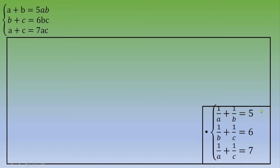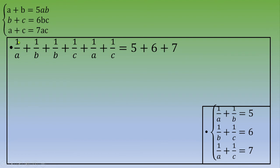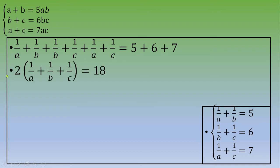The next idea is to add all three equations together. We get 1 over A plus 1 over B plus 1 over B plus 1 over C plus 1 over A plus 1 over C equals 5 plus 6 plus 7. On the left, we have 2 times (1 over A plus 1 over B plus 1 over C), which equals 18.